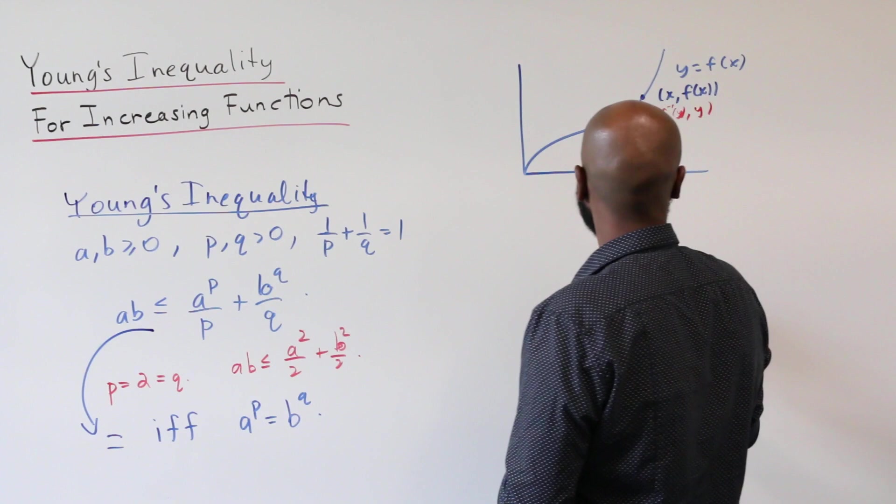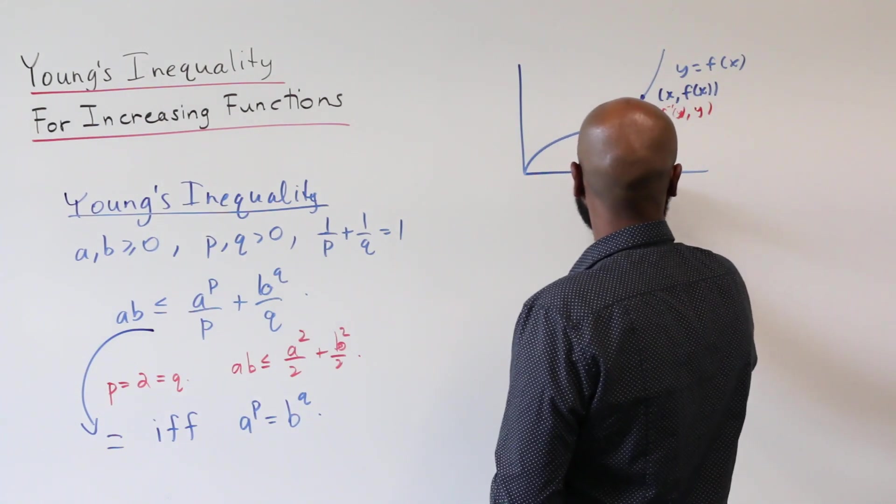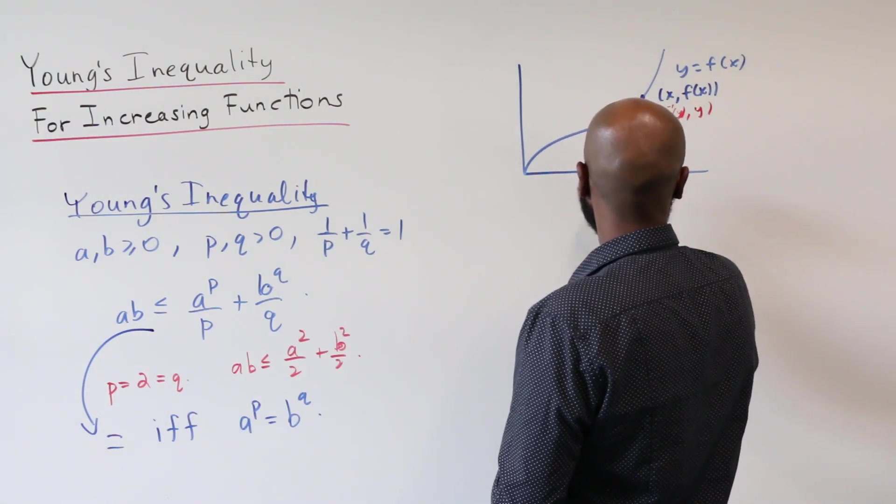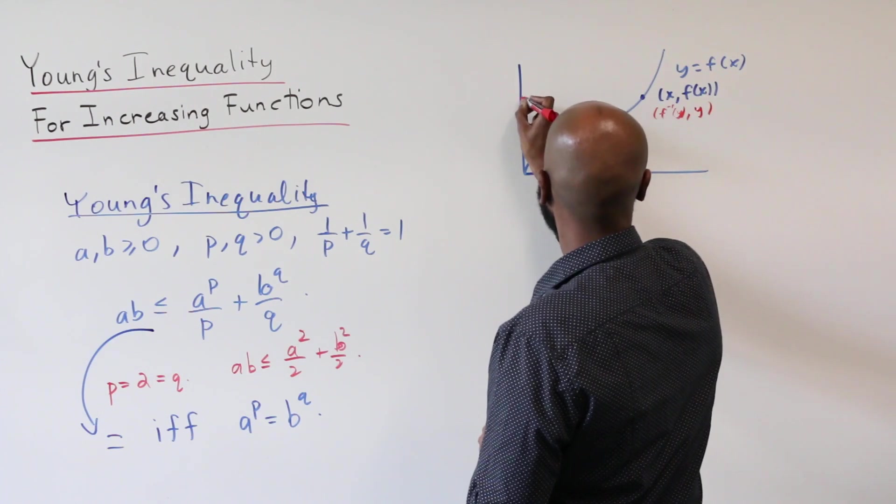Alright, so let's pick random points here on the x and y axis. I'll call this one A, and then maybe this one over here I'll call B.